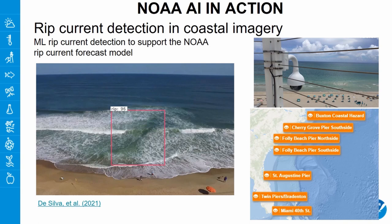The next one addresses the need for beach safety by detecting rip currents through coastal imagery. This is a partnership between our agency and scientists from academia — in this case the University of Santa Cruz. The machine learning applied here is a convolutional neural network trained to detect rip currents from images collected at the beach, and this supports the rip current forecast model. There is a recent paper published this year by Salva et al. for more details.